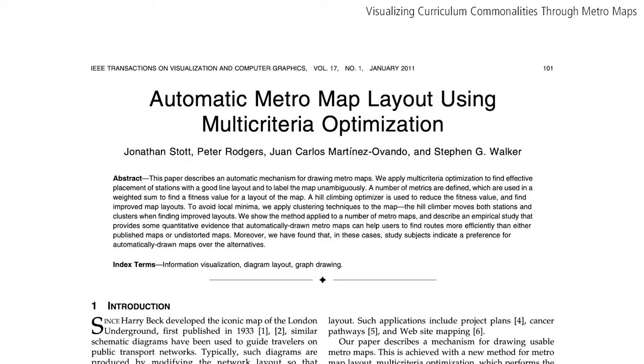In creating my algorithm, I mainly referenced Jonathan Stott's automatic metro map layout using multi-criteria optimization, which describes criteria with which to score a potential metro map layout and a hill-climbing algorithm that utilizes that criteria.